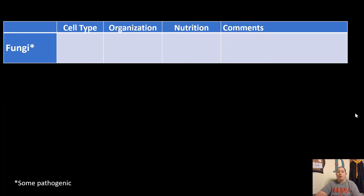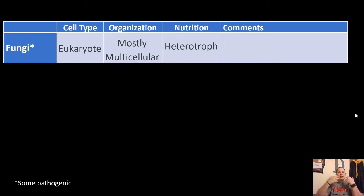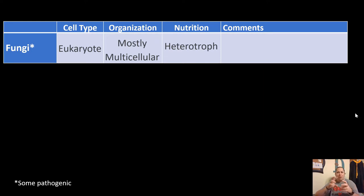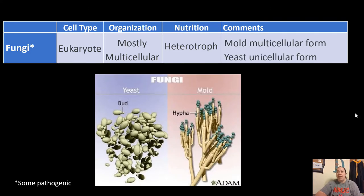The next group is fungi. Some fungi are pathogenic. They are eukaryotes, and their organization is mostly multicellular. Their nutrition is heterotrophic, but unlike us, fungi digest their food outside the body — they liquefy a substance and absorb the nutrients. This is why food with fungus growing on it becomes mushy and liquidy. Molds are a multicellular form of fungus, while yeast is a unicellular form. So fungi contain both types of organization.